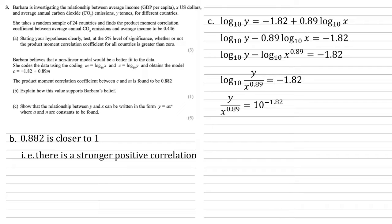Reversing our logs means that the right-hand side must equal 10 to the power of minus 1.82. And that's all equal to the inside of the log of y over x to the 0.89.